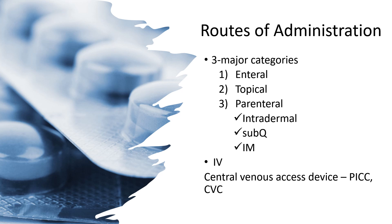There are various routes of medication administration. One is enteral — these medications are administered through the GI tract, which includes the mouth, stomach, and intestines. Enteral medication forms include tablets, capsules, or liquids. Sometimes the client may require an enteral tube that goes directly into the stomach or the small intestine, and oral medications may be provided through an enteral feeding tube.